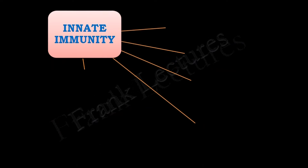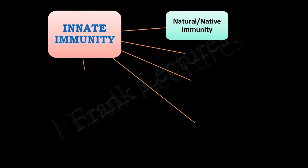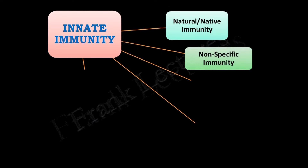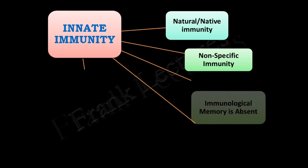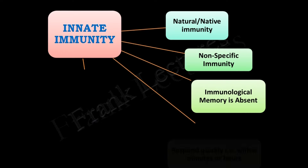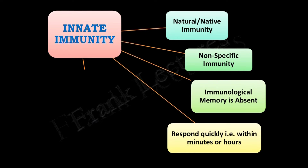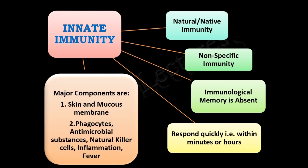Let us now summarize the main points of innate immunity. Innate immunity, also known as natural or native immunity, is non-specific immunity. Immunological memory is absent. It responds quickly, within minutes or hours. Its main components include skin and mucous membranes forming the first line of defense, and phagocytes, antimicrobial substances, natural killer cells, inflammation, and fever forming the second line of defense.